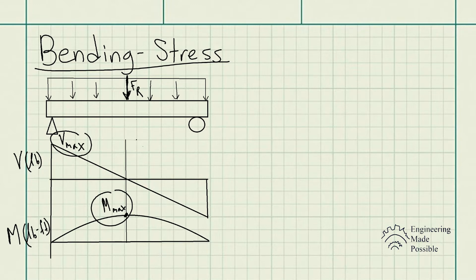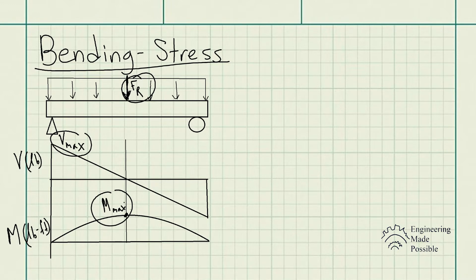I'll go ahead and link the videos on drawing shear and moment diagrams for beams, as well as solving for the resultant force of distributed loads. Once we find those maximum values of internal shear and moment, this is where we essentially stopped in statics. But in strengths of materials, we use these values to design the beam so it won't fail.